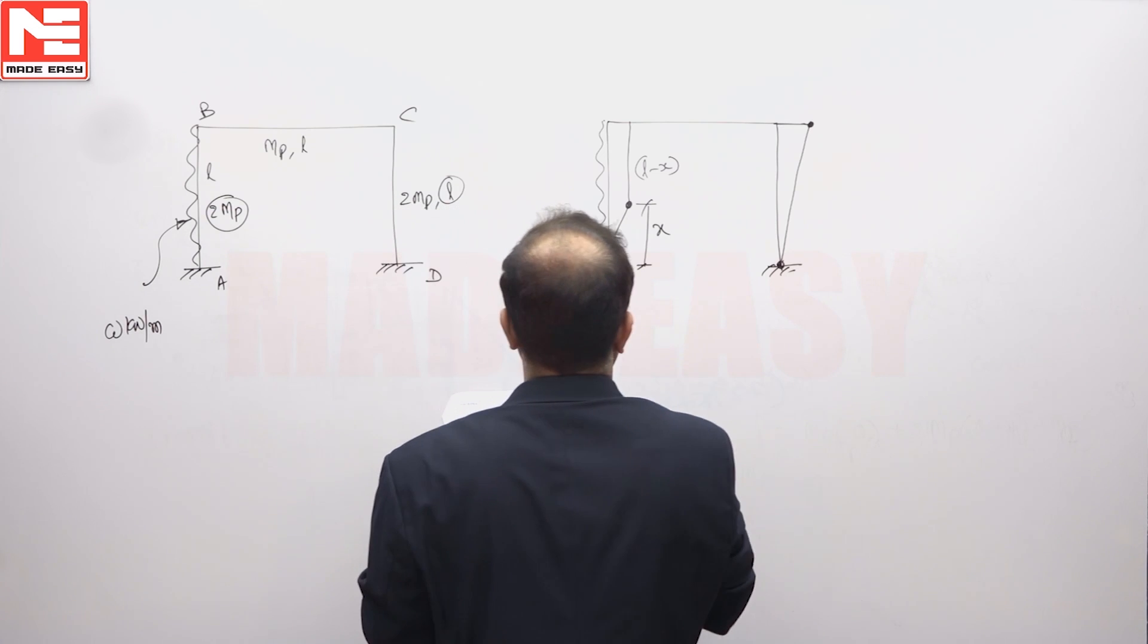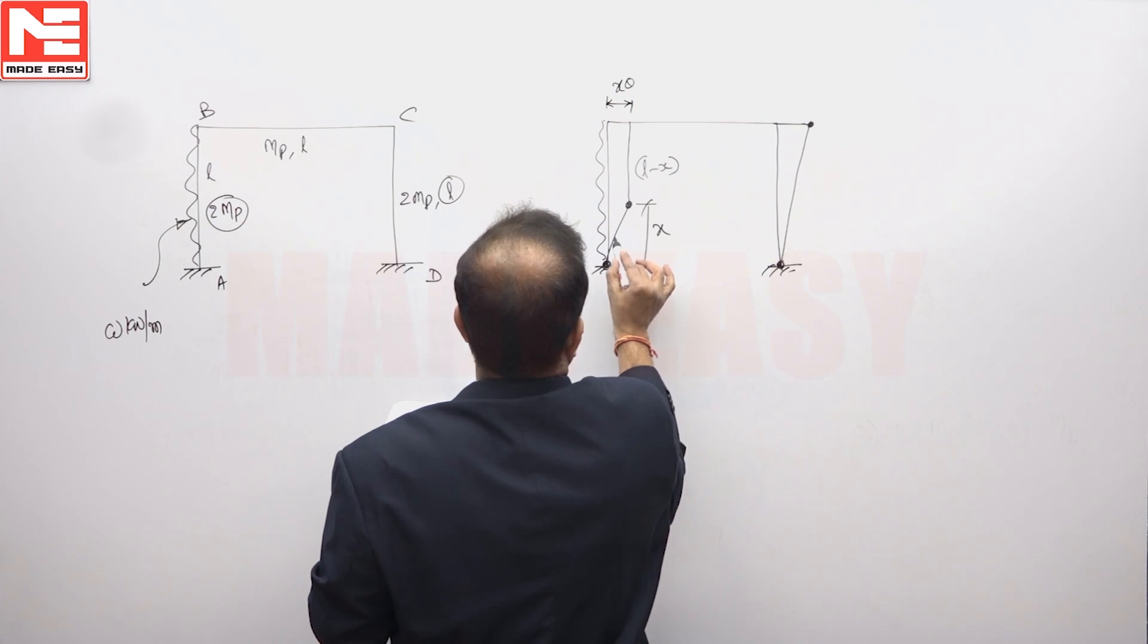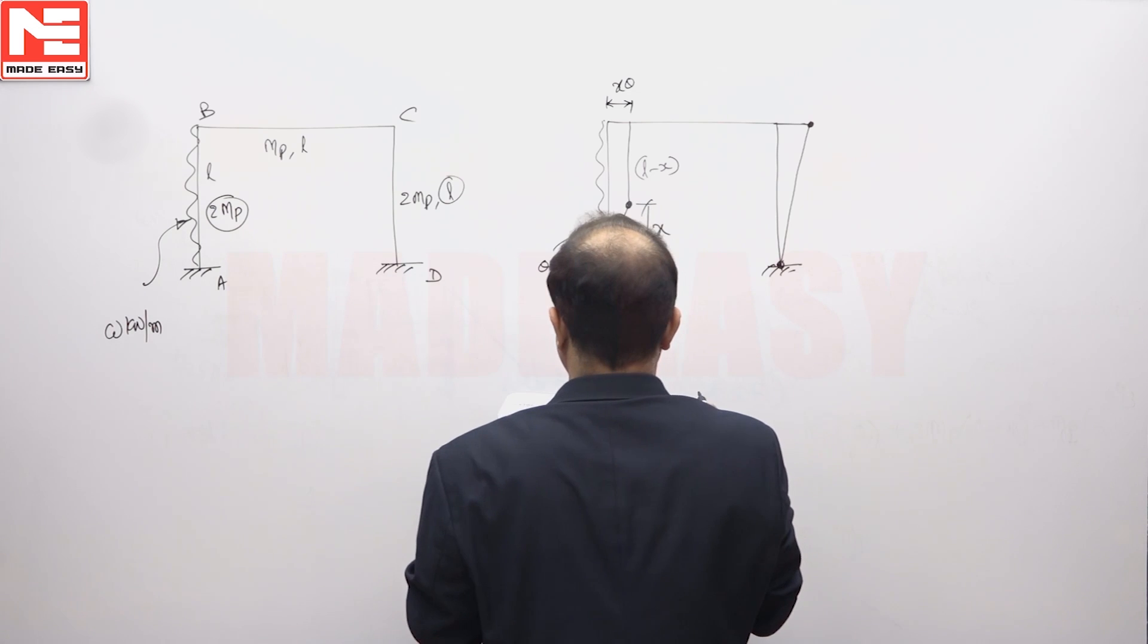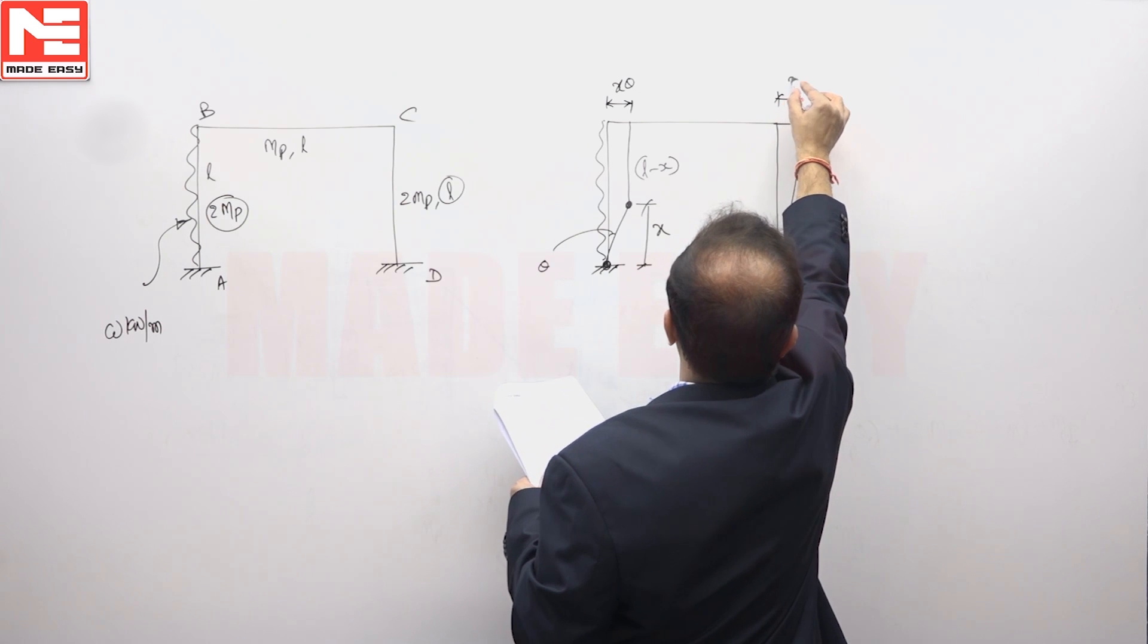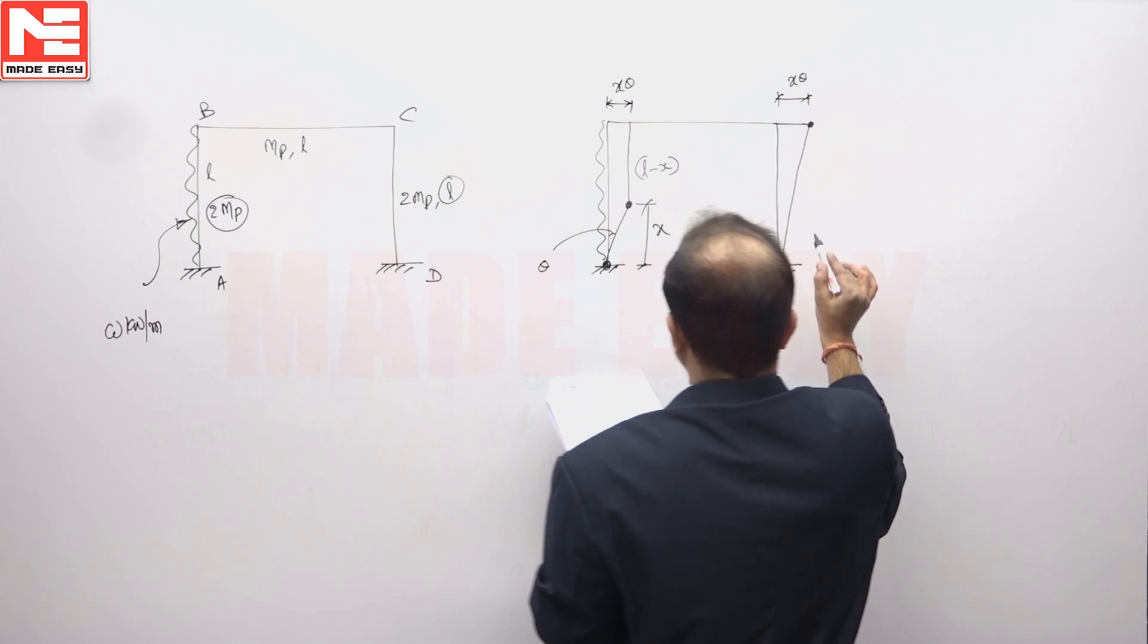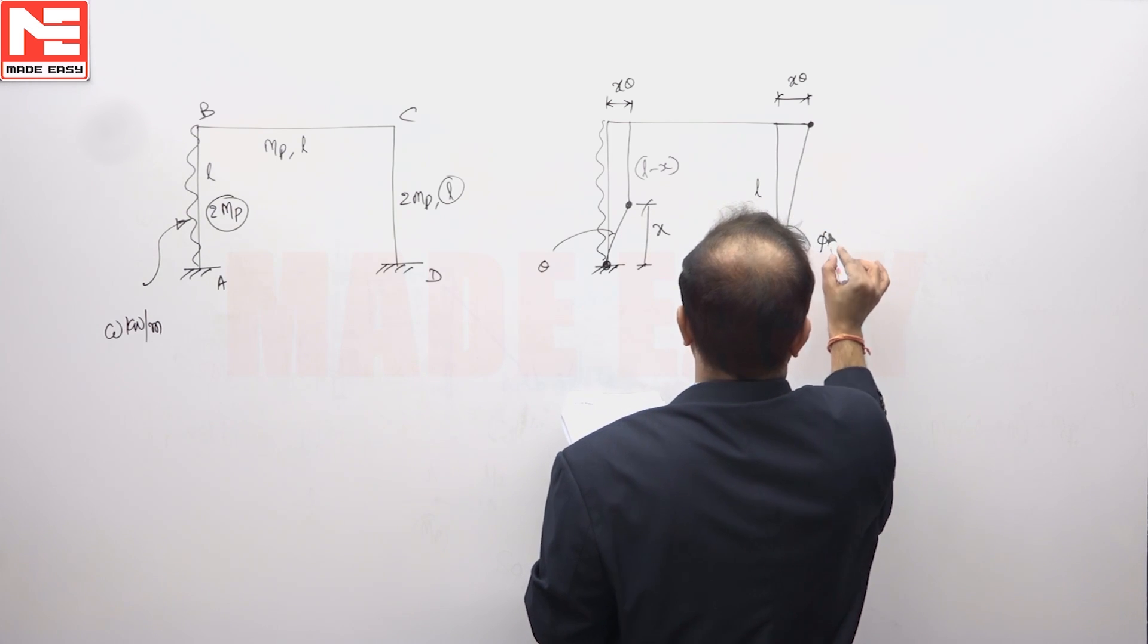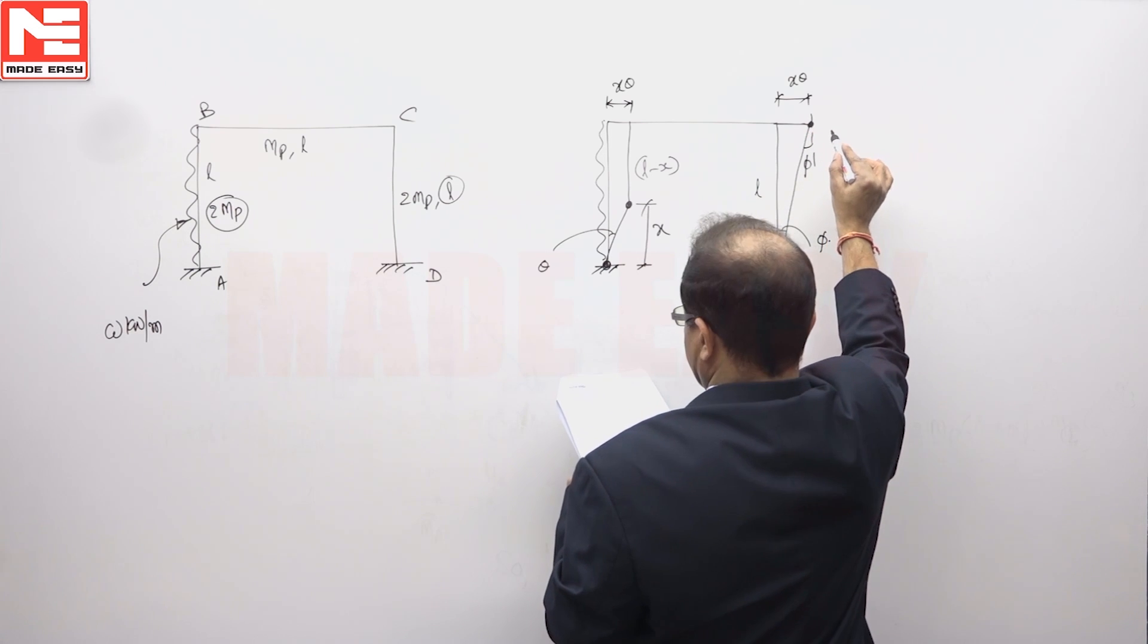So this is A, this will become now X into theta. This value we can take it as theta. X theta is also, this is also equal to X theta, is also equal to this length, say L. This angle you can take it as phi. This is also phi.